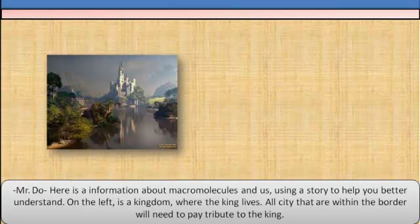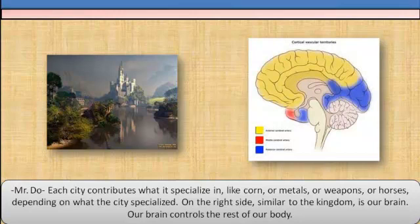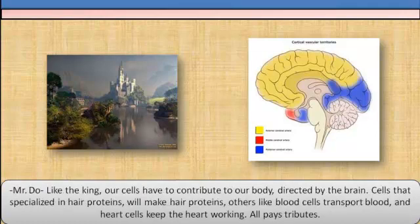On the left is the kingdom where the king lives. All cities within the border will need to pay tribute to the king. Each city contributes what it specializes in, like corn, metals, weapons, or horses, depending on what the city specializes in. On the right side, similar to the kingdom, is our brain. Our brain controls the rest of our body. Like the king, our cells have to contribute to our body, directed by the brain. Cells that specialize in hair proteins will make hair proteins. Other cells, like blood cells, transport blood, and heart cells keep the heart working. All pay tribute.